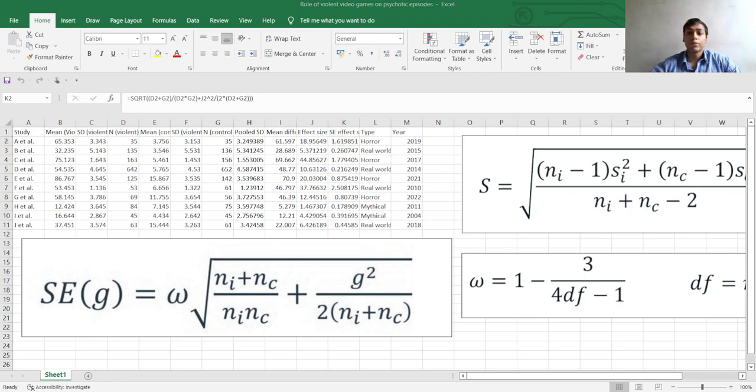So after calculating the effect size and standard error we are now ready to upload this csv file into JASP and that will be shown in the next few videos. So that's it for this video, thanks for watching and I'll see you in the next video.